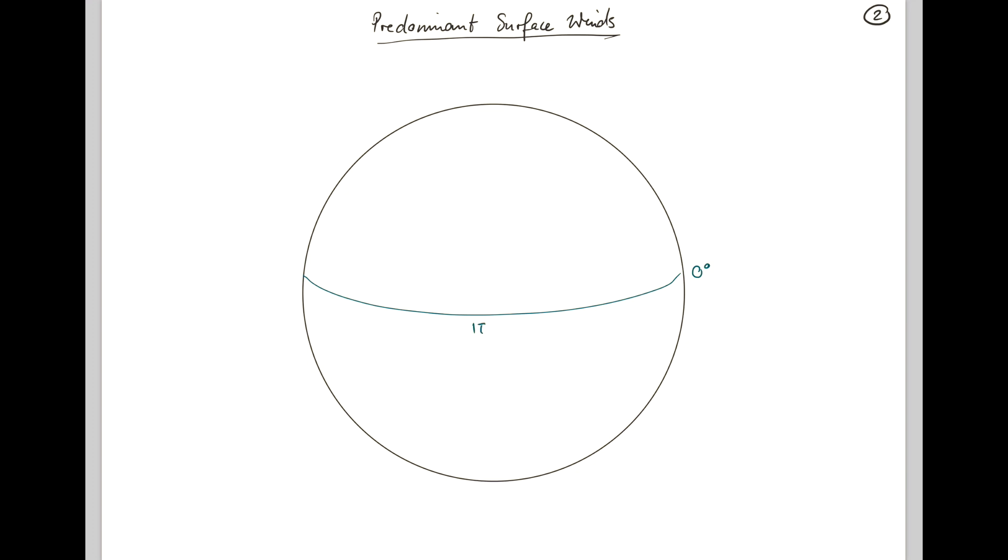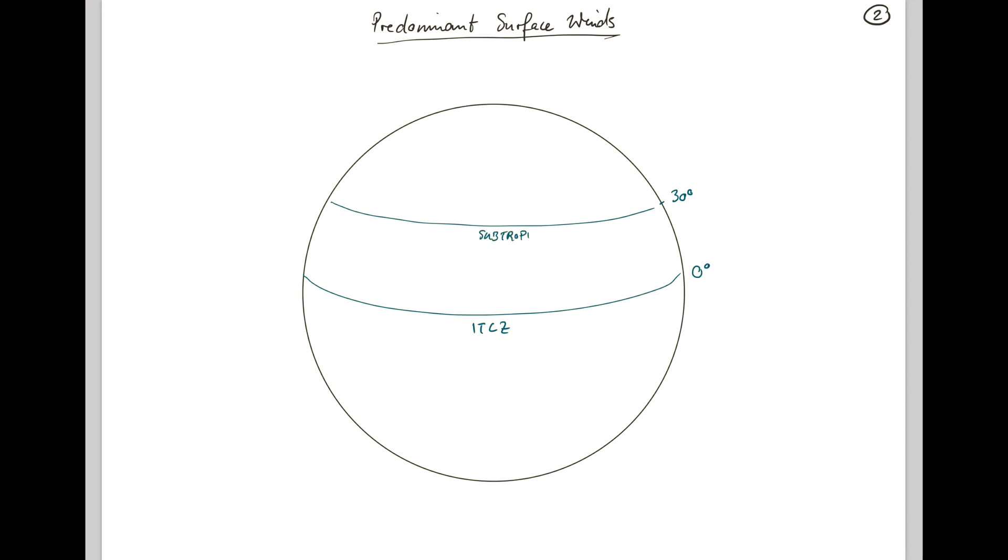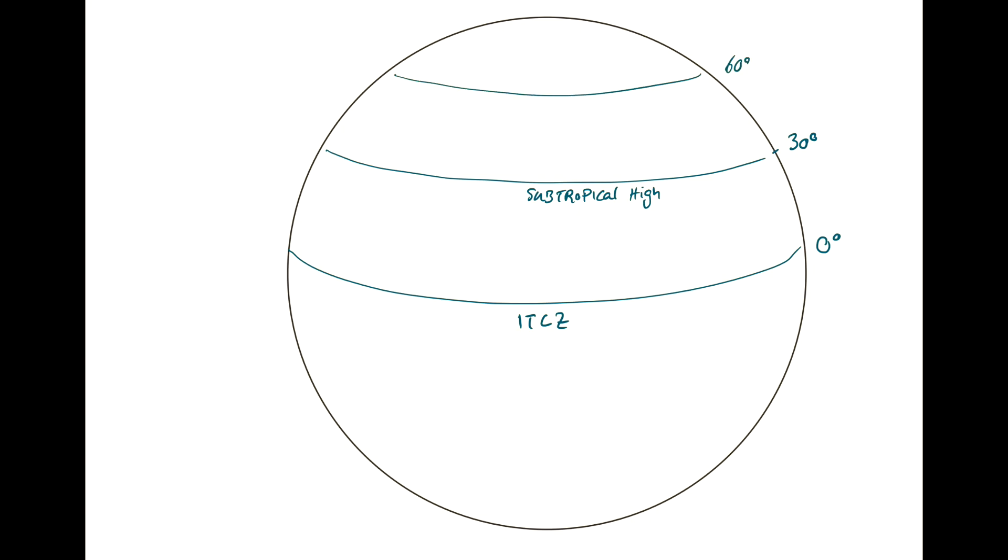At zero degrees we have the ITCZ, the Intertropical Convergence Zone. Then at 30 degrees we have the Subtropical High. At 60 degrees we have the Polar Front, and in the Central Arctic we have the Polar High. And this is mirrored on the Southern Hemisphere.